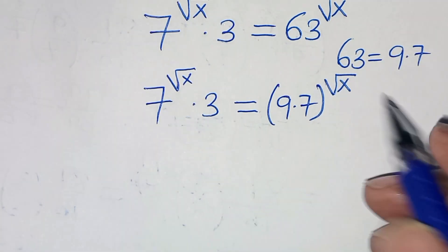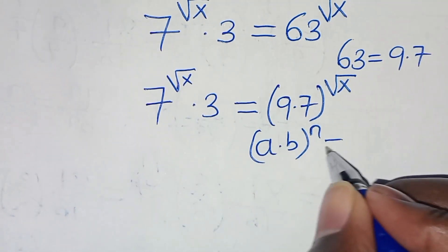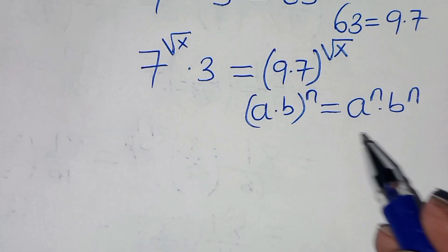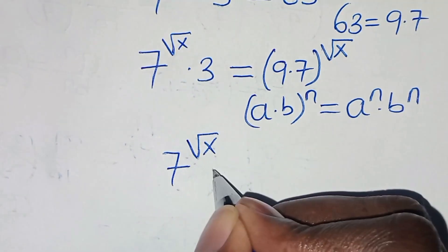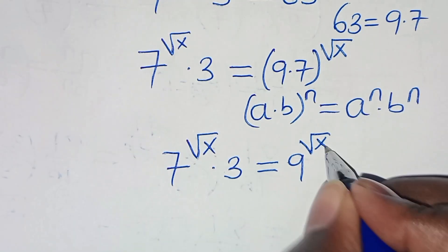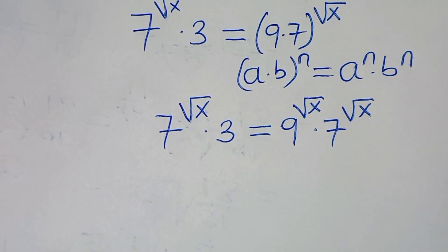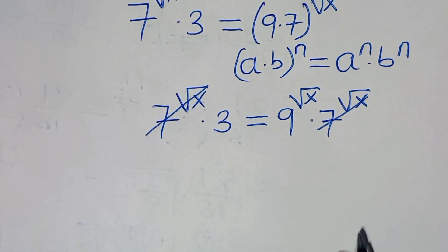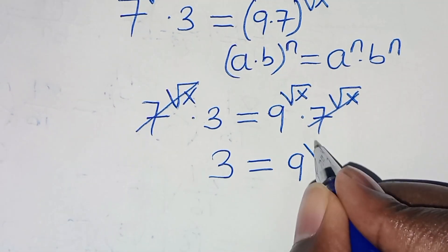9 times 7 raised to the power of square root of x is in the form of a times b raised to power n, which we can express as a to the power of n times b to the power of n. Applying this exponent property, we have 7 to the power of square root of x times 3, equal to 9 to the power of square root of x times 7 raised to power square root of x. Simplifying by cancelling 7 to the power of square root of x from both sides, we get 3 equals 9 raised to the power of square root of x.